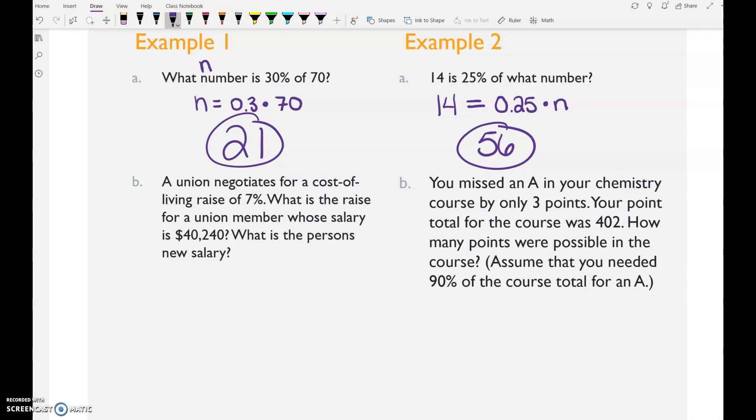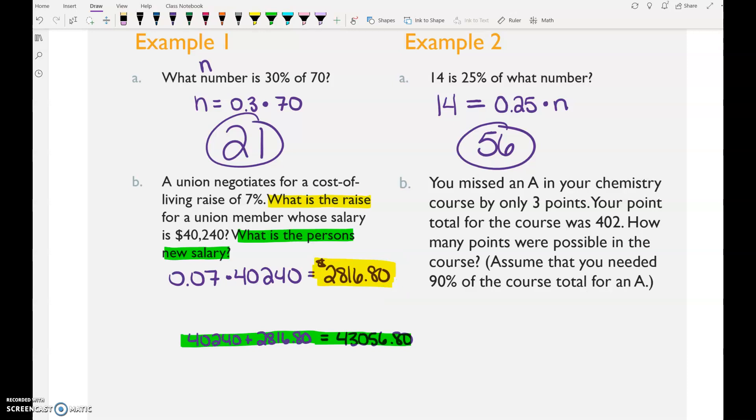A union negotiates for a cost of living raise of 7%. What is the raise for a union member whose salary is $40,240? We want 7% of his salary. So 0.07 times 40,240. See if you can figure out or just calculate what that raise is and then figure out what is the person's new salary. So here's our raise, and then add that to the original salary. Here's the new. Make sure you finish your answer by putting a dollar sign in front of it. Make sure that you use your label.